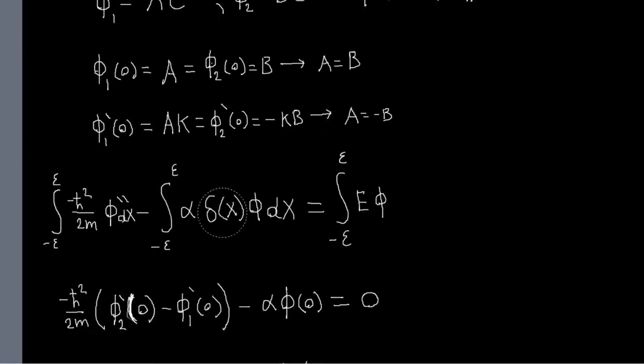And then this term, we just, again, this will just pick out phi of zero because of the delta function. And then this term, when you integrate, as we take the limit as epsilon goes to zero, we're just integrating over a continuous function over no range. So you're basically just summing zero, so you're not going to get anything from this term. So this is just zero.